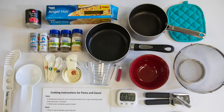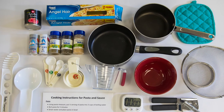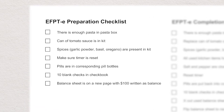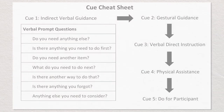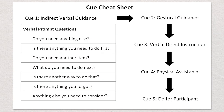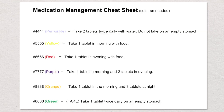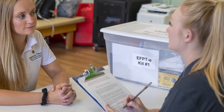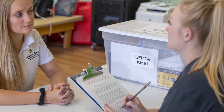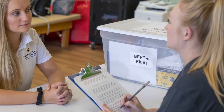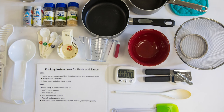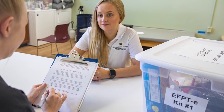Over the course of a testing session, several items are used and some are reduced in amount, like spices, or disposed of, like tomato sauce cans. It is suggested to review the EFPTE preparation checklist to ensure all items have been replaced prior to beginning another administration of the assessment. The administrator will need the following items: cueing cheat sheet, scoring sheet, task-specific cheat sheet, clipboard or other portable hard surface to hold documents and write on, writing utensil, and stopwatch. The client will need access to the EFPTE container and, during the cooking task, cooking instructions. All other items the client will need, including writing utensils, will be found in the EFPTE container.